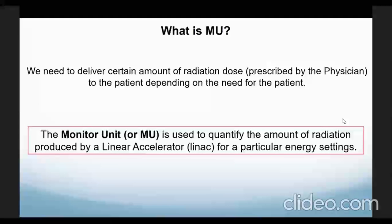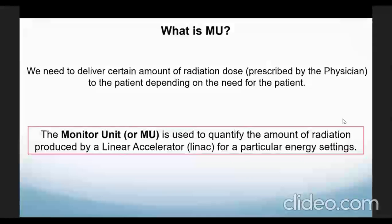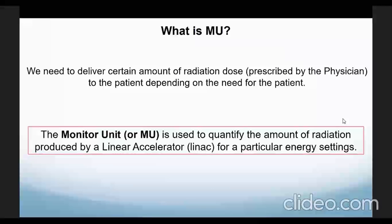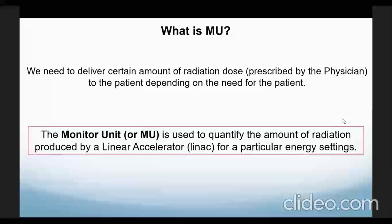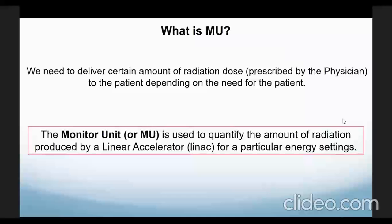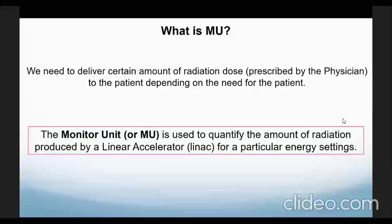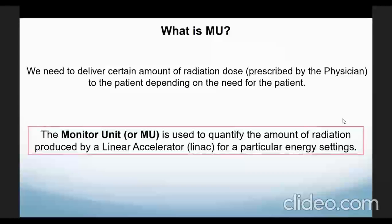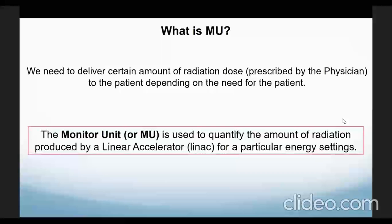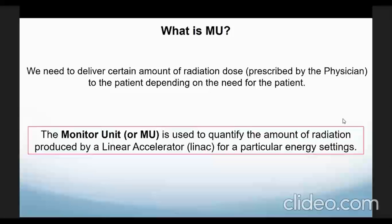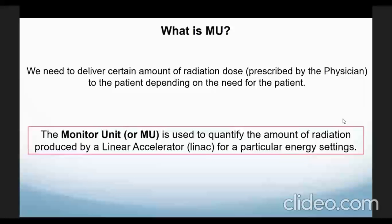The first question is: what is MU? We need to deliver a certain amount of radiation dose, which will be prescribed by the physician to the patient depending on their need. The machine can deliver radiation but does not know how much it is giving. So we need to relate the output of the machine to some quantity of radiation — how much we are giving to the patient. The monitor unit is used to quantify the amount of radiation produced by a linear accelerator for a particular energy setting.